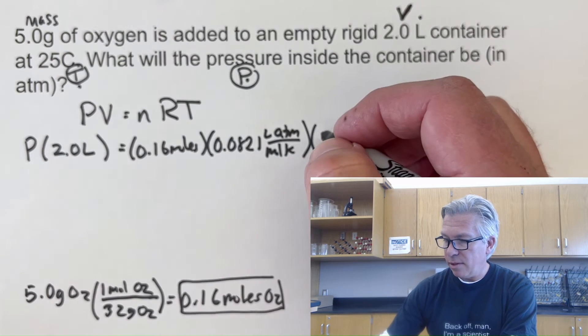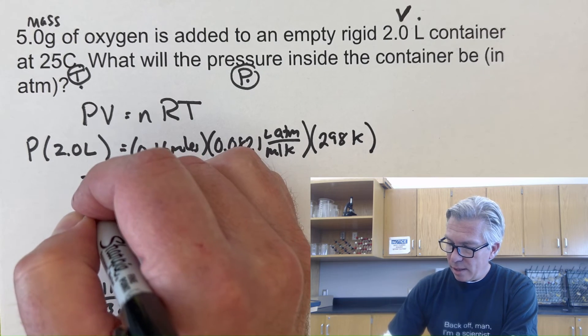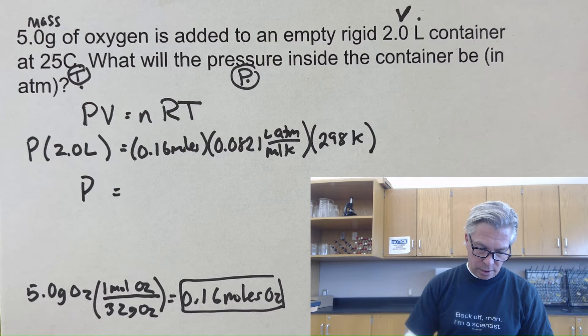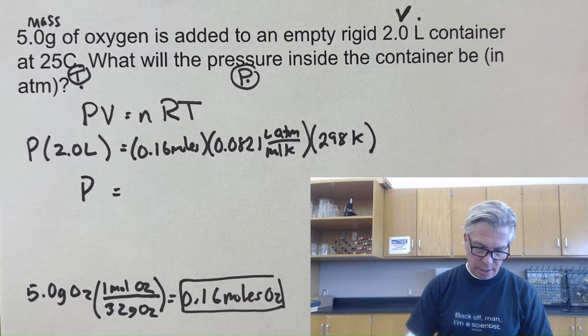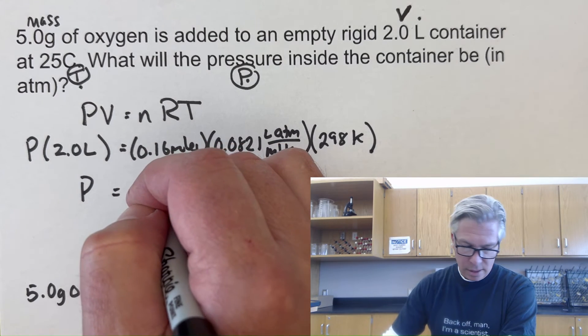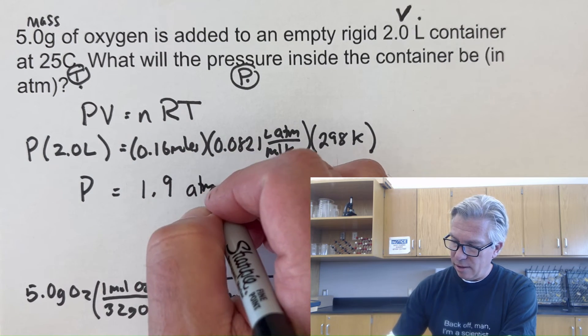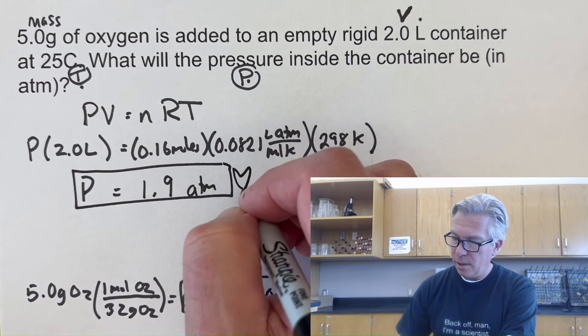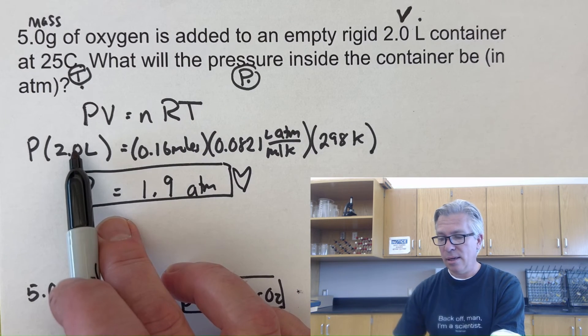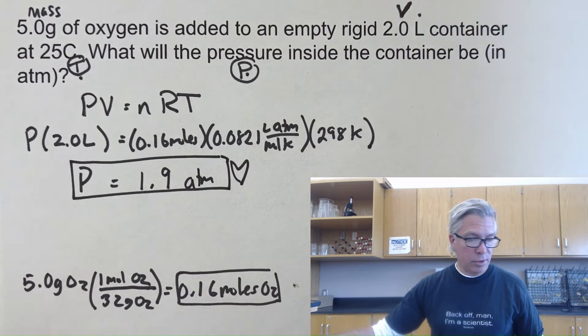Once we've got it all set up, I'm going to multiply these three numbers together: 0.16 times 0.0821 times 298, and divide by 2 to get that on the side. I got 1.9, I'm going to keep only two digits, atmospheres of pressure inside this container. So again, convert to moles if you need to, put it in for moles, you have the temperature, volume. In this case, what's the pressure? That's how you use the ideal gas constant, and I have another one for you to try.